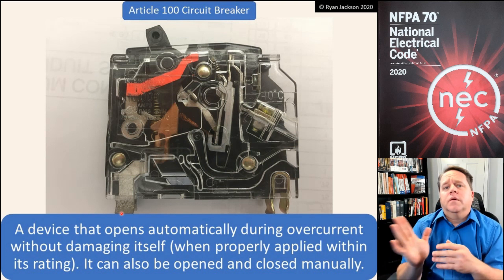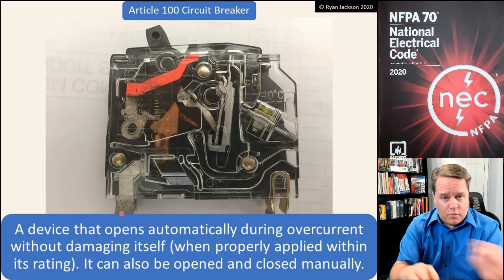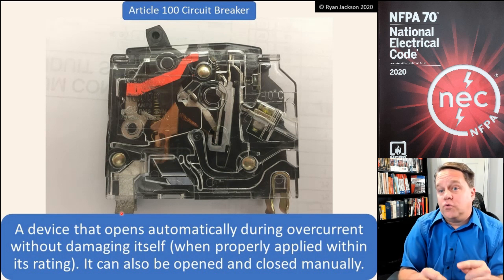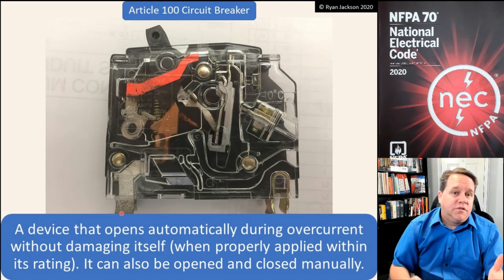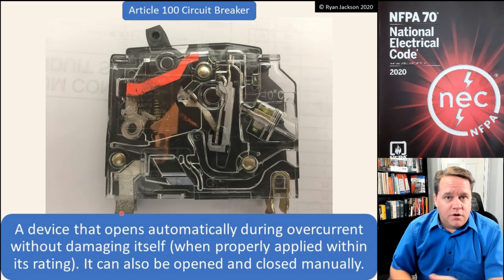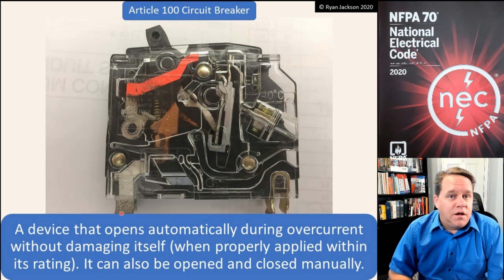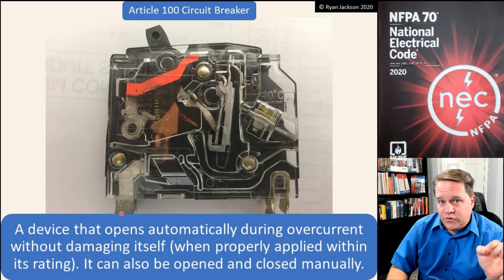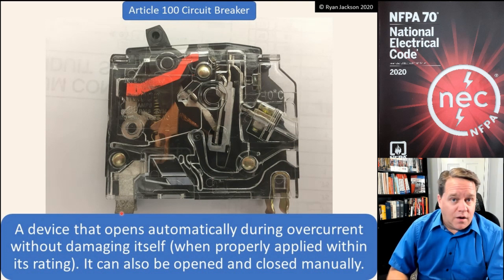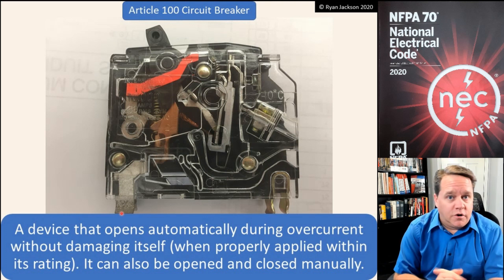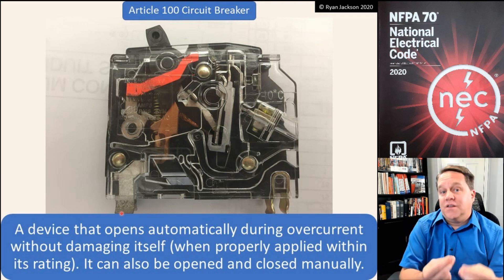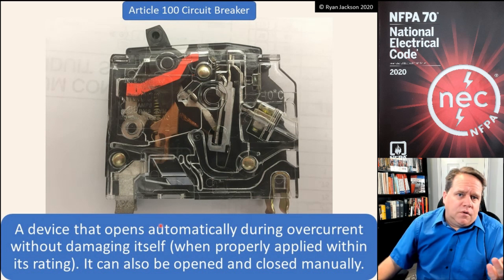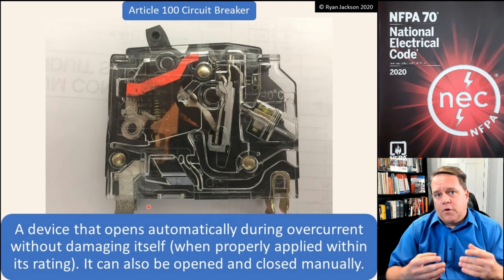Once it cools down, the bimetal goes back to its original shape and we can reclose it. If it hasn't cooled down enough — for example, if you plug in 10 hair dryers, trip the breaker, run downstairs and reset it, then plug them right back in — it's going to trip pretty quickly because the bimetal has already heated up. If we let it cool down, we'll be able to use it for a longer duration before the bimetal changes shape and opens the circuit again.